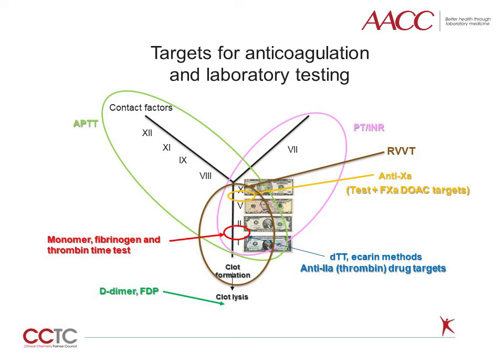This cartoon of the coagulation cascade demonstrates the various targets for anticoagulant agents and depicts the laboratory testing pathways, drug, and assay targets. The currency or dollar bill shown in the common pathway represents a simple trick to remember those factors in this pathway and their order of reactions: 10, 5, 2, and 1. Factor 1 is also known as fibrinogen. Both direct 10A inhibitors and direct thrombin inhibitors can potentially cause prolongation of the APTT, PT, and Russell's viper venom time, or DRVVT, as they inhibit factors within these pathways.